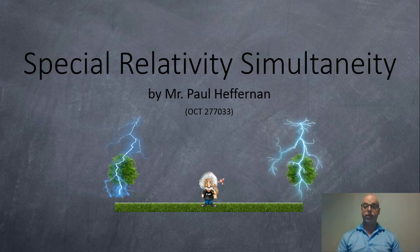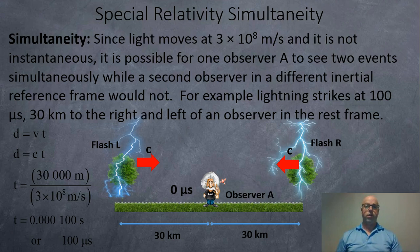That's when two events seem to be synchronized or occur at the same time. Since the speed of light moves at 3 times 10 to the 8 meters per second in all reference frames, it's not really instantaneous. So it is possible for one observer, like observer A below, to see two events simultaneously while a second observer in a different inertial reference frame would not.